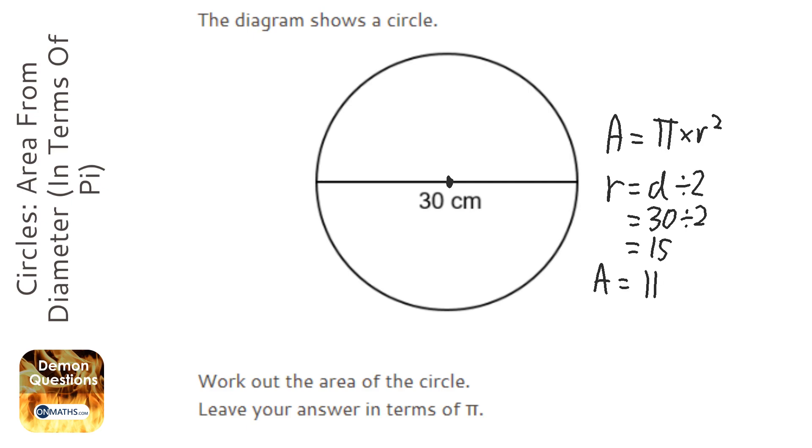So the area is pi times 15 squared. Now chances are this is on the non-calculator paper. So I'm going to have to solve this without a calculator. So pi times 15 squared which is 225.